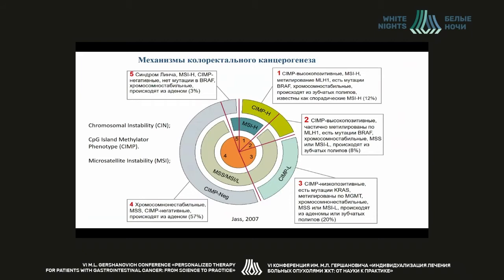I'd like to start with colon cancer and recollect the work on colorectal carcinoma. The most interesting classification, presented in 2007, describes three main characteristics of the tumor genome: chromosome stability, methylation or hypermethylation, and MSI, characterized with a higher level of mutation. The great share is tumors of the fourth type: chromosome unstable without MSS, CIMP negative.